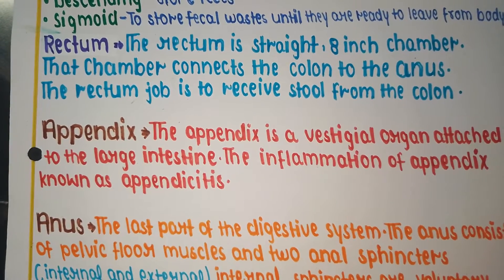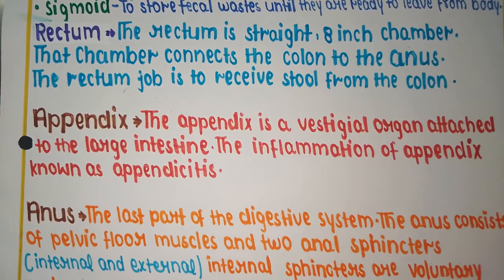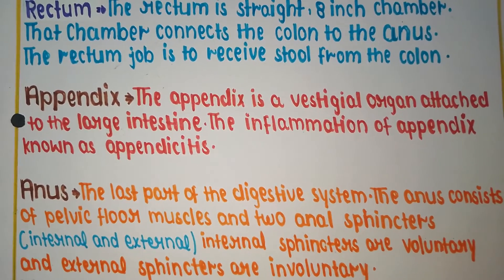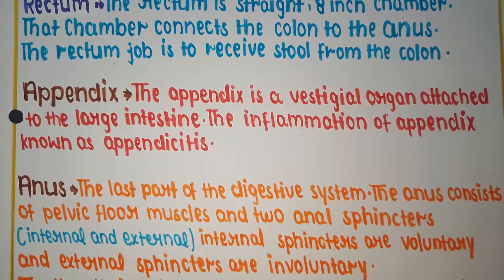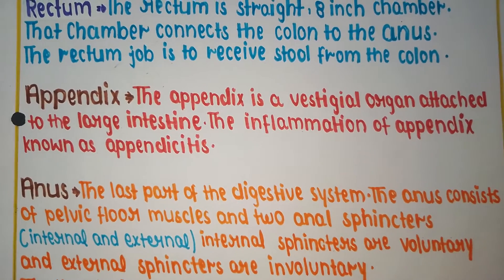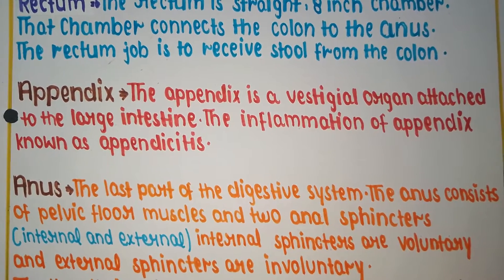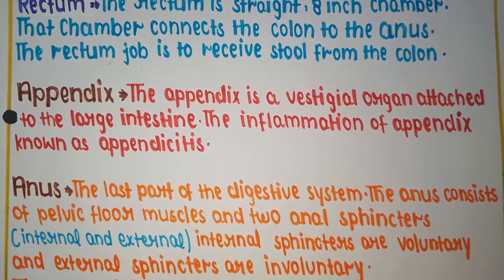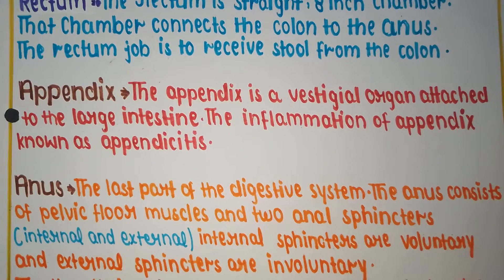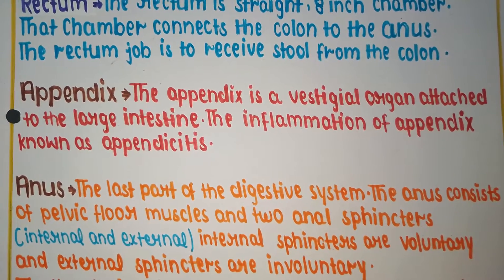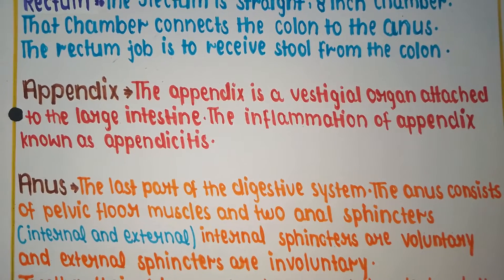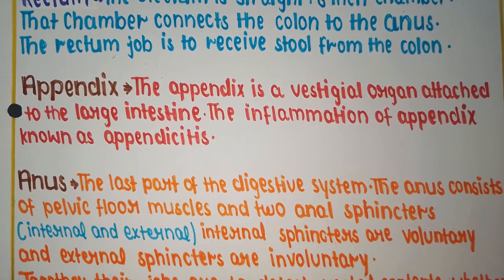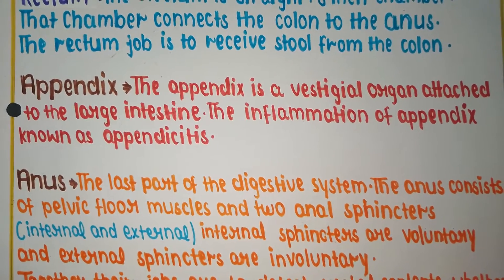The appendix is a vestigial organ attached to the large intestine, meaning it functions like a waste organ in our body. The inflammation of the appendix is known as appendicitis. The appendix is like waste material in the human body and can be removed if needed without causing any harm to the body.